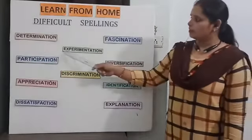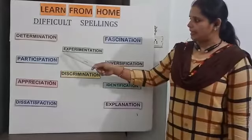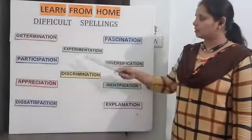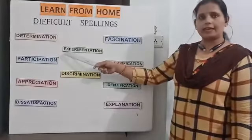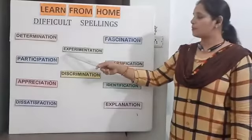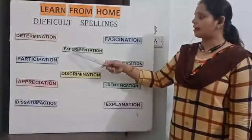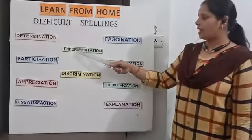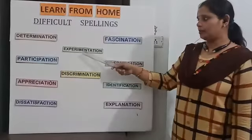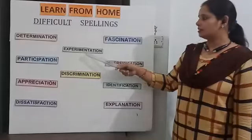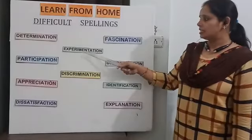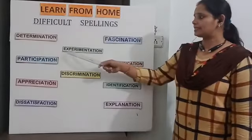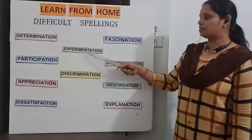Third word is 'experimentation.' E-X — P-E-R-I — 'peri' — M-E-N — 'men' — T-A-T-I-O-N. Experimentation.